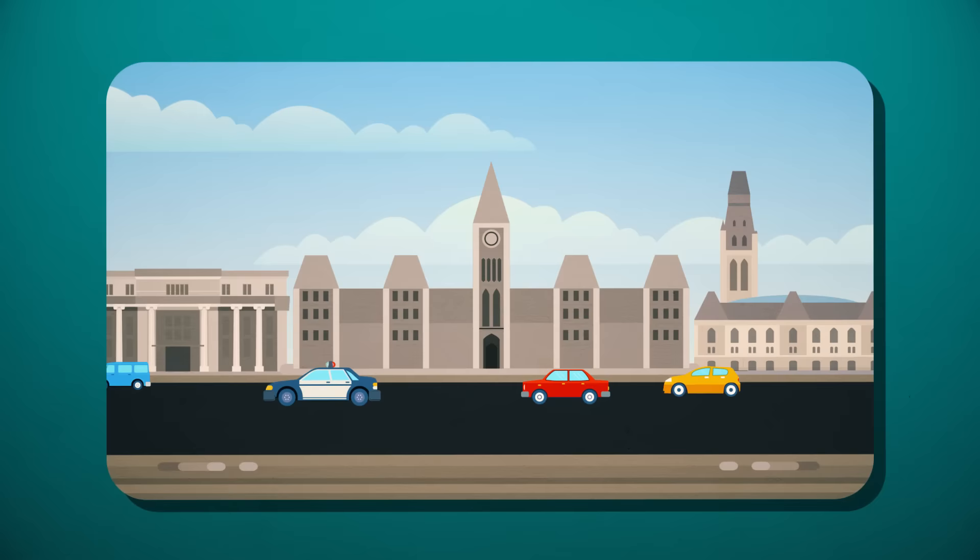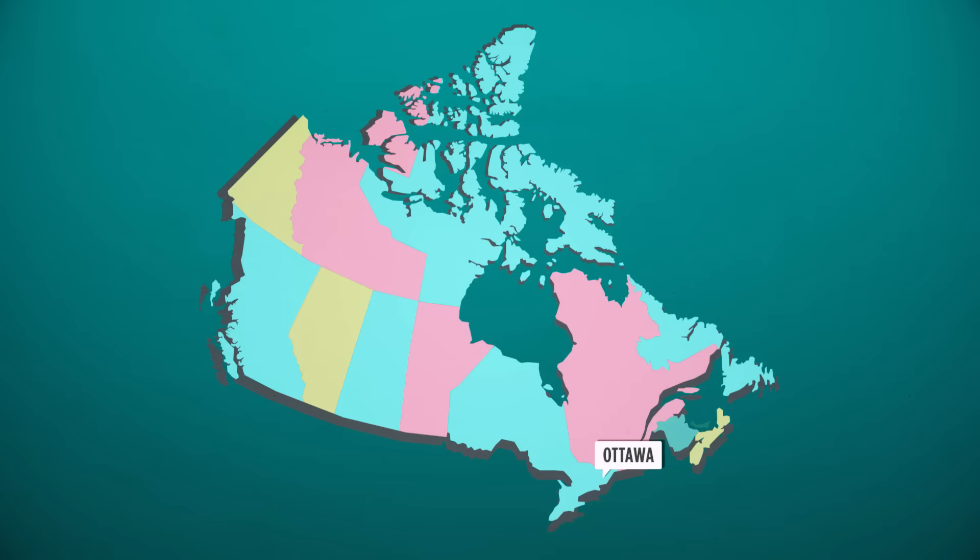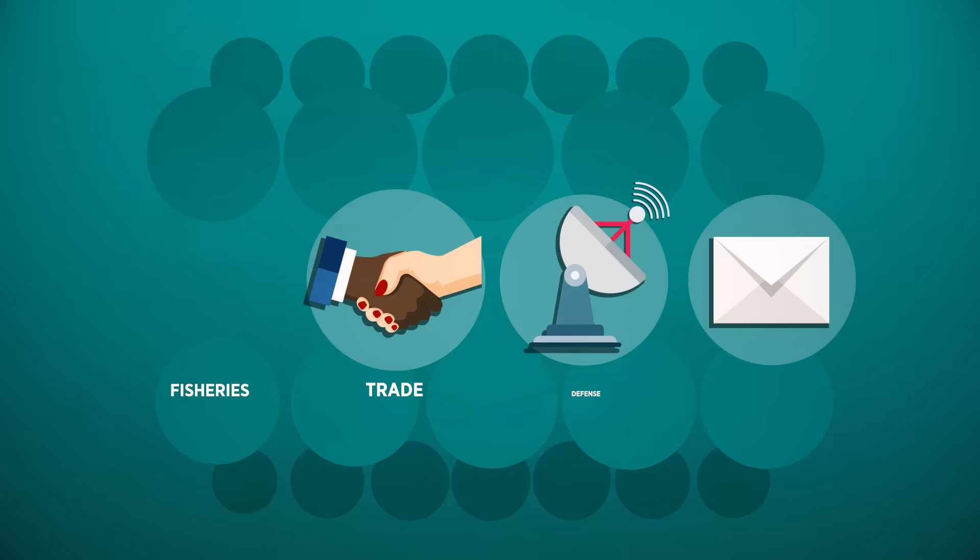Parliament is the heart of Canada's democracy. Located in the national capital, Ottawa, it's the country's federal legislature. This means Parliament makes laws that affect the whole country, in certain areas like fisheries, trade, defence, or the postal service. These are things that affect all Canadians, no matter where they live.